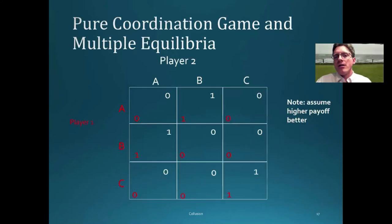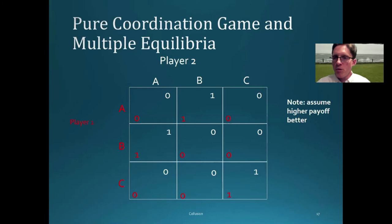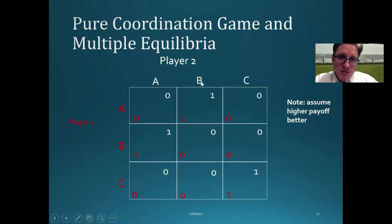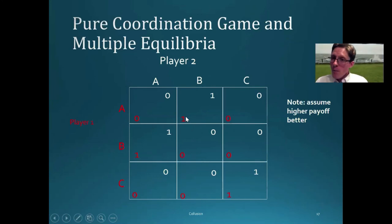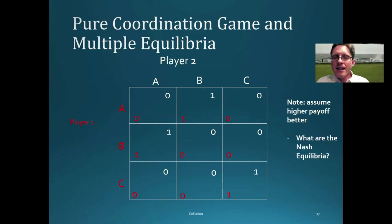Let's look at one other payoff matrix. Take a few moments to look at this payoff matrix and figure out what the Nash equilibrium or equilibria are — pause the video and try to come up with your answer. The answer is that player two choosing B and player one choosing A is a Nash equilibrium. But player two choosing A and player one choosing B is also a Nash equilibrium. Likewise, C and C are a Nash equilibrium. Nash equilibria are not necessarily unique.